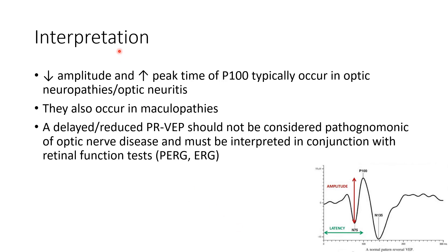Coming to the interpretation of VEP, reduced amplitude and increased peak time of P100 typically occur in optic neuropathies and optic neuritis — that is, the amplitude will be reduced and the latency will be increased in optic neuritis. They also occur in maculopathies. Therefore, a delayed or reduced PR VEP should not be considered pathognomonic of optic nerve disease and must be interpreted in conjunction with retinal function tests like ERG.